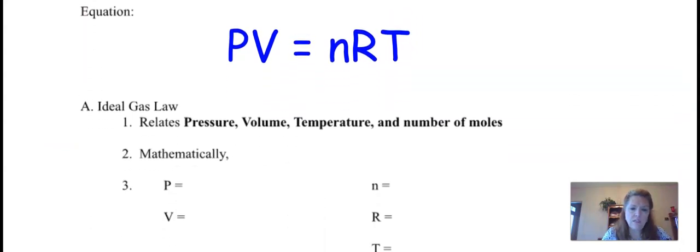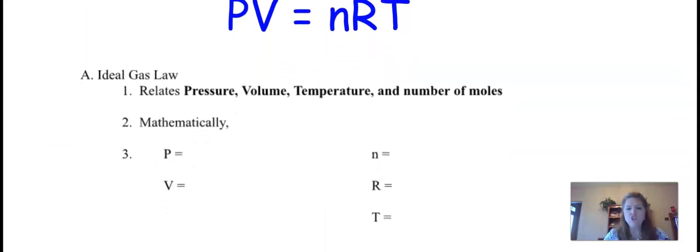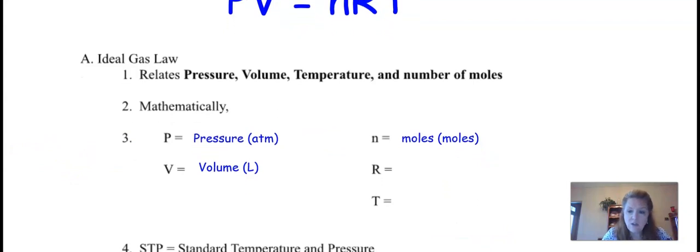So what is the equation? I wrote it big. PV equals nRT. I think some are pretty obvious. What's P? Pressure. V is volume. N is moles. We kind of used that before. R is a gas law constant. And T is temperature.